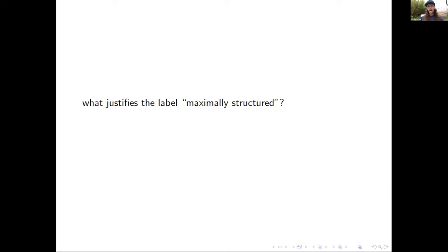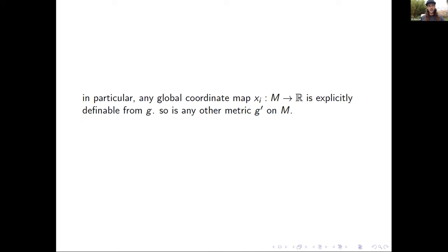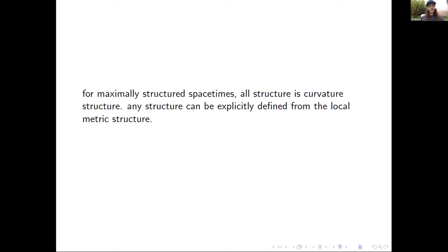What justifies the label 'maximally structured'? Here's some current work with Hans and Thomas. Given a maximally structured spacetime (M, g) and any tensor field T on M, one can explicitly define T from g. In particular, any global coordinate map is explicitly definable from the metric. In addition, any other metric g' is explicitly definable from the original metric g. For maximally structured spacetimes, all structure is curvature structure and any structure can be explicitly defined from the local metric structure.